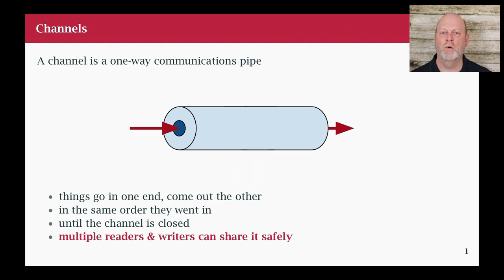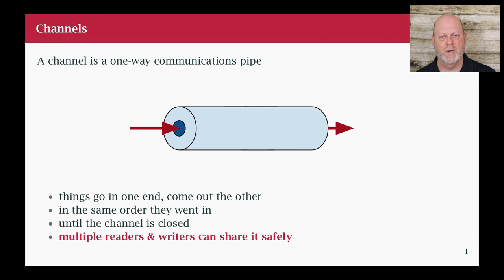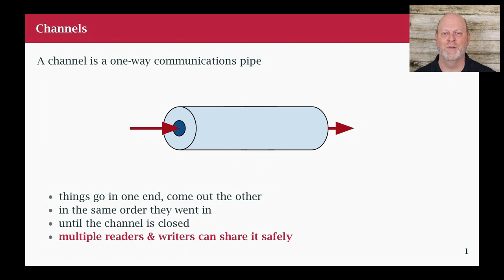Data keeps coming out until the writing end is closed. The important difference is that in Go, it's safe to have multiple readers and writers for a pipe. Normally on the command line, there's really no way to actually have multiple readers and writers on a pipe between programs. But when we set up channels in Go, we can have multiple readers and writers. The fact that channels are safe for this purpose solves a lot of our underlying concurrency problems if we use them.